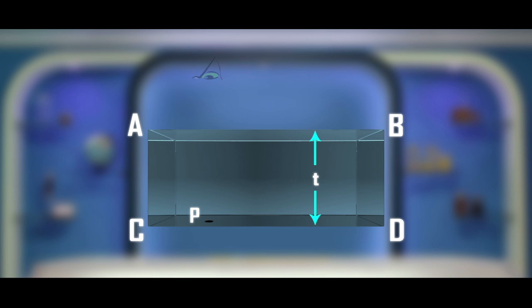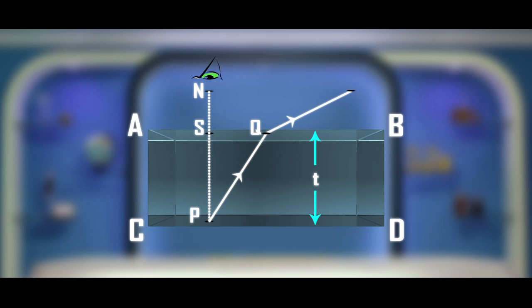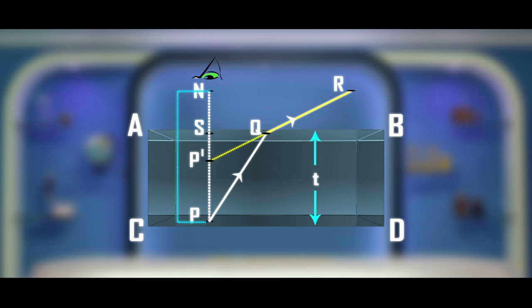Now mark a point P at the bottom of the glass slab. Due to the refraction of light at the surface AB, the point appears to raise and it looks like the point P is at P dash. Here P is the original marked point and P dash is the virtual image of the point P. The distance between the point P and point of view N is the real depth, where the distance between the point P dash and the point of view N is the apparent depth, which is due to the refraction of light.